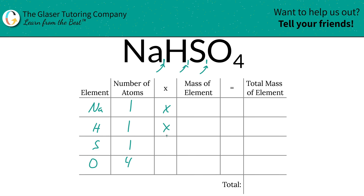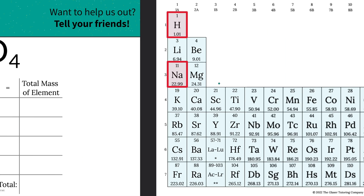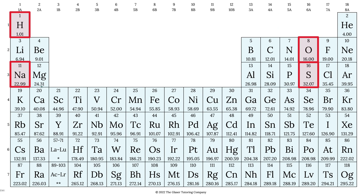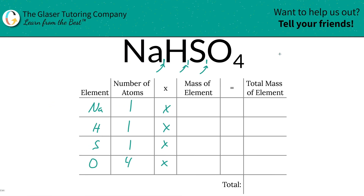Then we're going to take those number of atoms and multiply it by the mass of each particular element. Those masses are found on the periodic table. So sodium is 22.99, hydrogen is 1.01, sulfur is 32.07 — that's a weird 3.